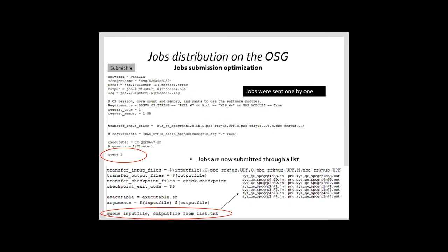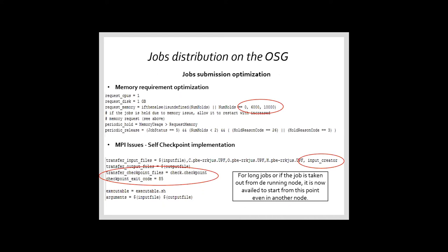Another issue we have is that each possible structure has a different memory requirement. So instead of relaunching the job with a bigger memory requirement, we use this line that allows us to relaunch the job with a bigger memory requirement if the structure needed it.